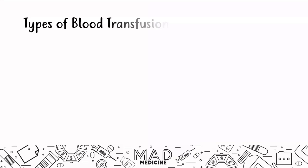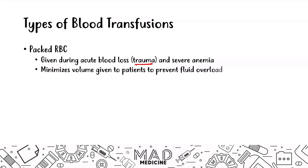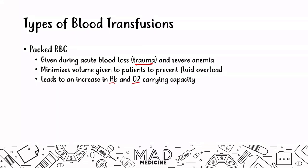There are several different types of blood transfusions you need to know for Step 1. The first type is packed red blood cells. You give packed red blood cells to patients who have acute blood loss in the case of trauma and severe anemia. This minimizes the volume given to a patient to prevent fluid overload, while still giving red blood cells so they can transport oxygen properly. This leads to an increase in hemoglobin and oxygen-carrying capacity of the blood.